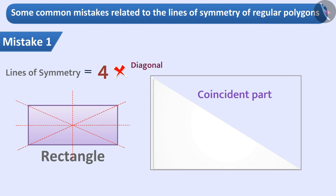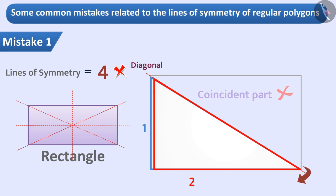You will find that by folding the rectangular paper along one diagonal, you do not get two parts which overlap each other completely. Therefore, a line drawn along a diagonal in a rectangle is not a line of symmetry.